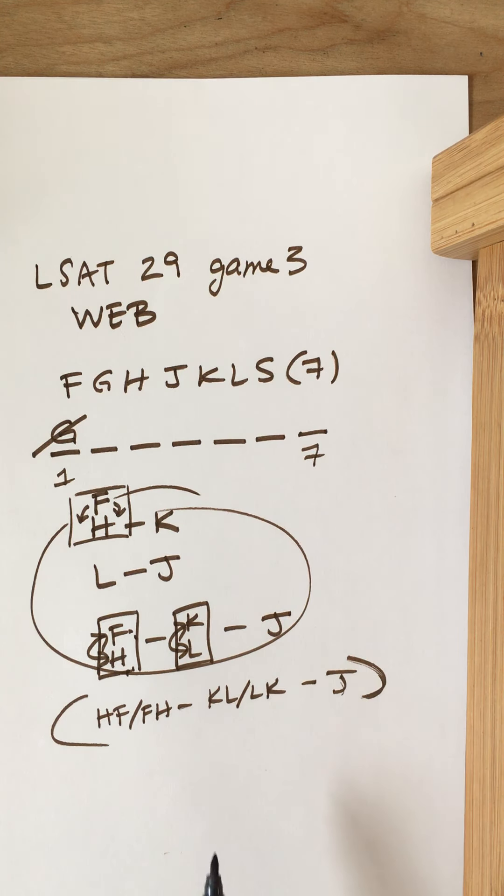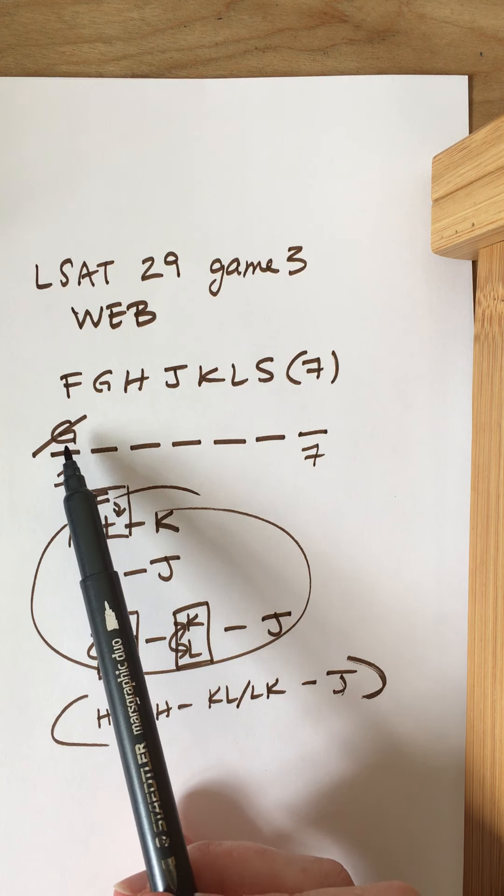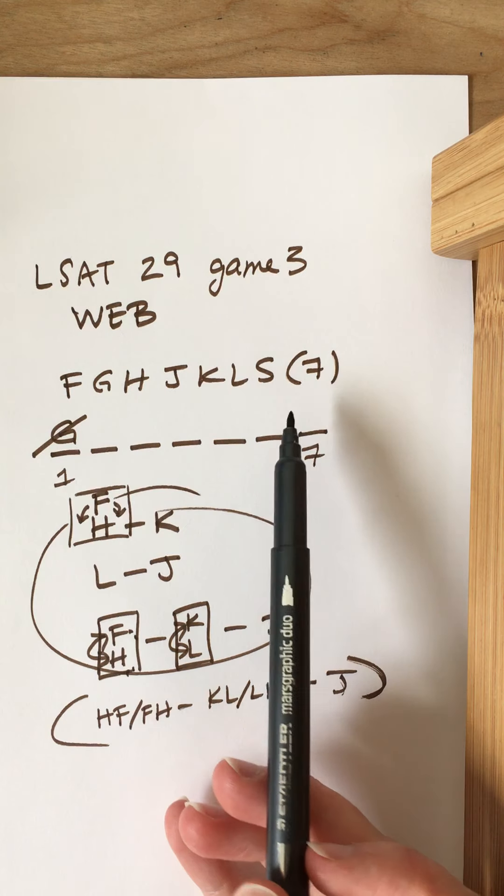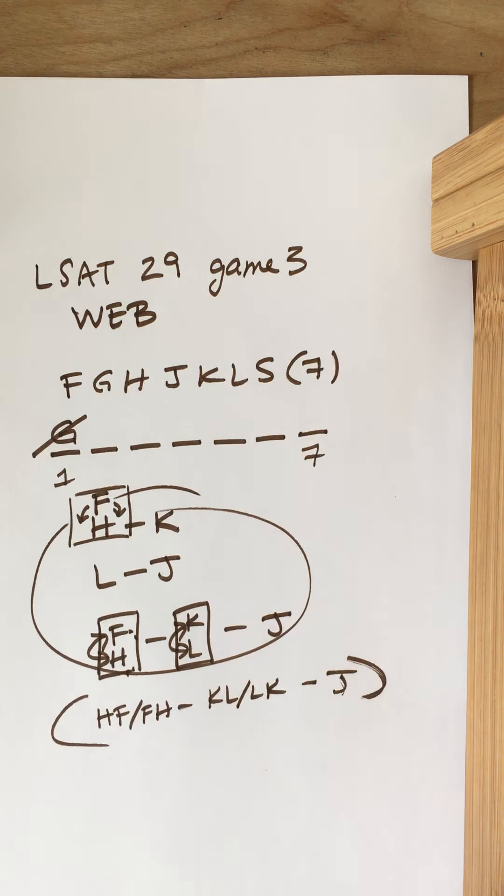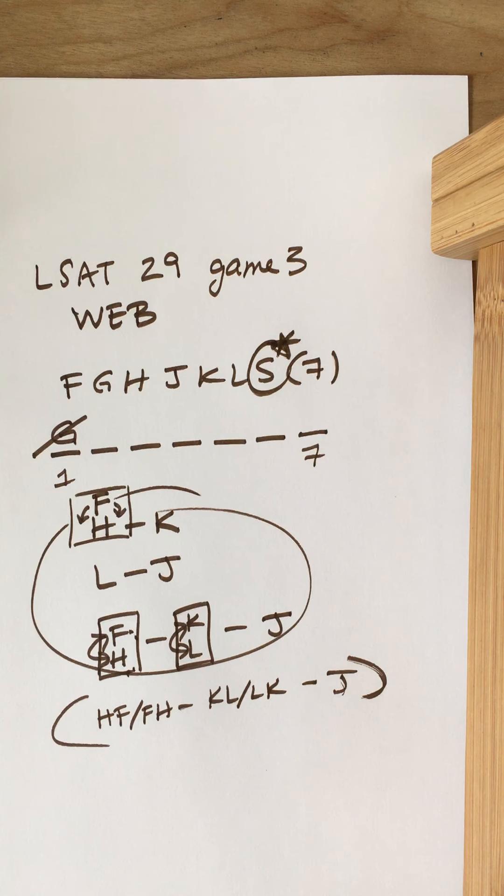Yeah, so five of our players are represented in this web diagram. So two of them are missing. G is missing, right, but G isn't completely unrestricted. G isn't a total wild card. And S is missing and S is a total wild card. So I'm gonna want to circle S, star it, just make sure that I'm not forgetting about S. S of course could be either first or last or anywhere in between.